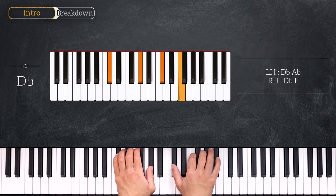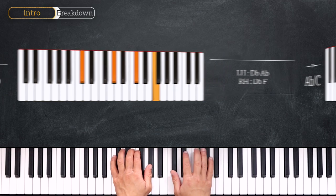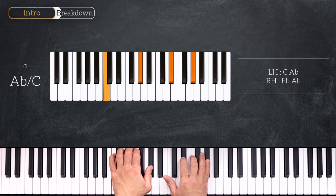Then we'll play Db. Playing Db, Ab on the left and Db, F. Next we go to the first degree again. Playing C, Ab on the left, Eb, Ab on the right.